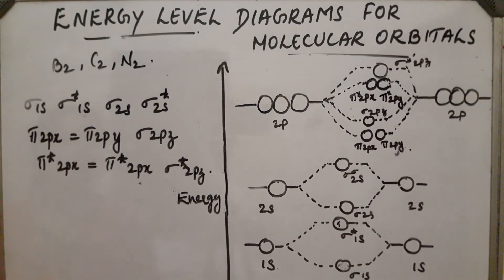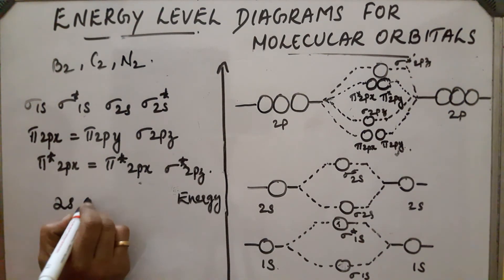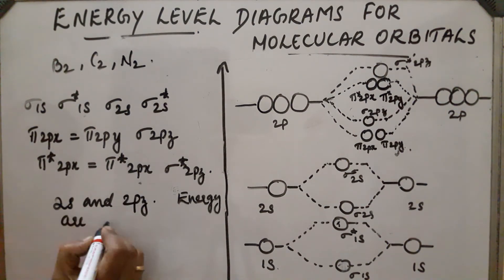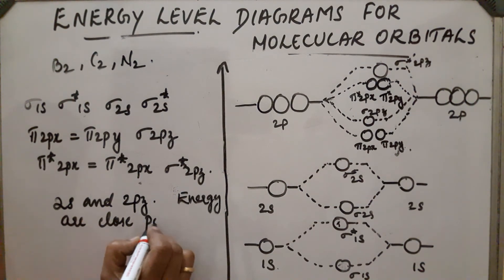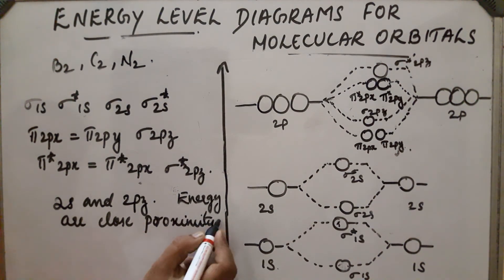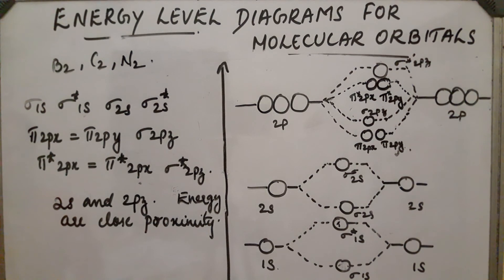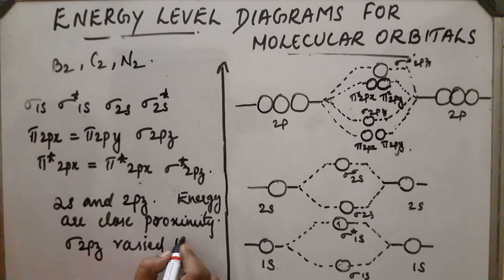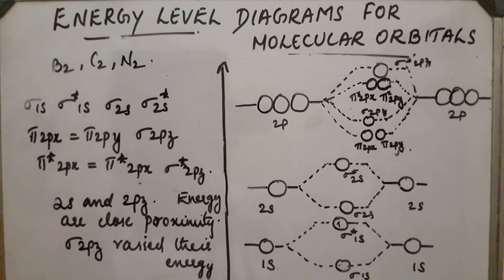This is due to an important reason: in the case of these compounds, the 2s and 2pz orbitals are very close to each other. Due to their close proximity, there is intermixing of these orbitals taking place. Sigma 2s, sigma* 2s, sigma 2pz, and sigma* 2pz undergo intermixing. As a result, sigma 2pz raises its energy, making it higher than pi 2px and pi 2py. These are the different energy level diagrams for different molecules.